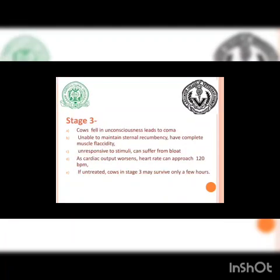In Stage 3, the cow falls into unconsciousness leading to coma, is unable to maintain sternal recumbency, and has complete muscle flaccidity. The cow is unresponsive to any stimuli. As cardiac output worsens, heart rate can approach up to 120 BPM — compared to the normal of 48–84 BPM in healthy cows. If untreated, cows in Stage 3 may survive only a few hours.